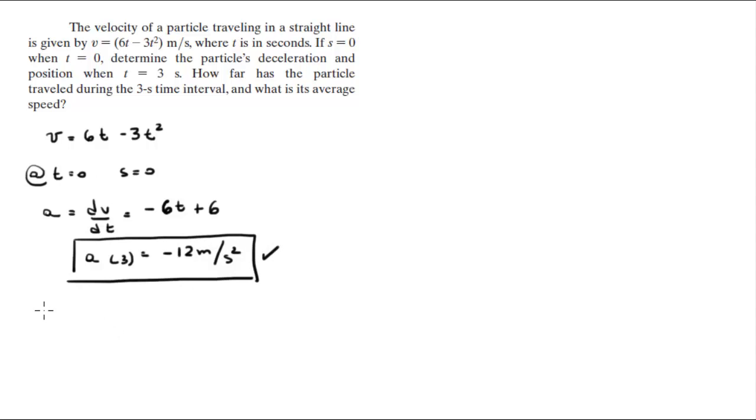Now we need to find the position. You know that the position is the integral of the velocity over time. When you integrate 6t minus 3t squared, you get that this is equal to 3t squared minus t cubed plus c.